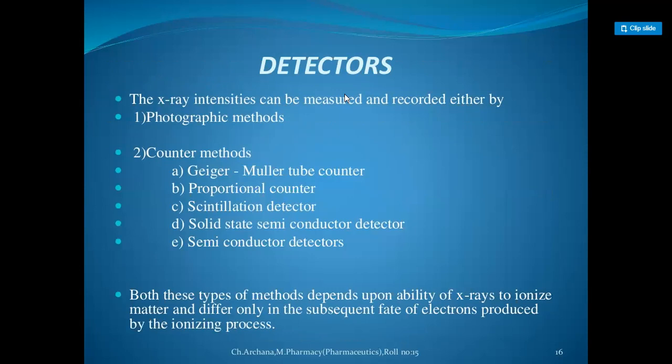X-ray intensities can be measured and recorded either by photographic methods or counter methods. Counter methods include the Geiger-Müller tube counter, proportional counter, scintillation detector, and solid-state semiconductor detector. Both types of methods depend on the ability of X-rays to ionize matter and differ only in the subsequent fate of electrons produced by the ionizing process.